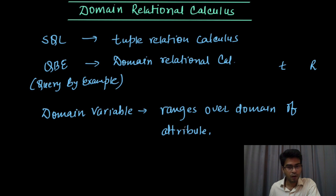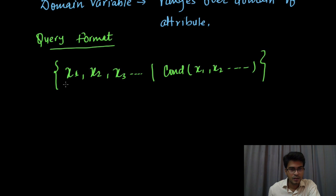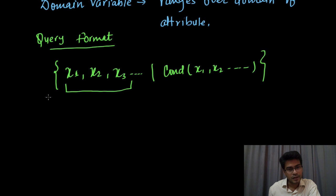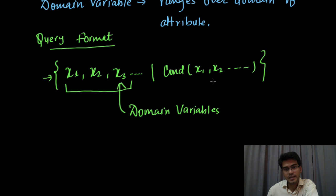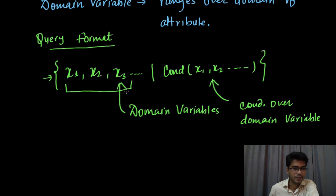To form a relation of n degree we need n domain variables. This is our query format: to form an n degree relation — meaning the output of the query is also a relation — we have { x1, x2, x3, ... | condition }, where x1, x2, x3 are domain variables and the expression after the pipe symbol represents conditions over those domain variables.